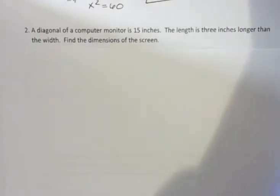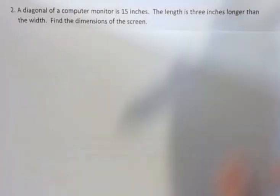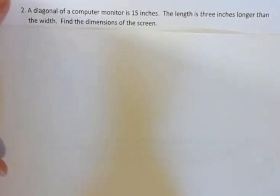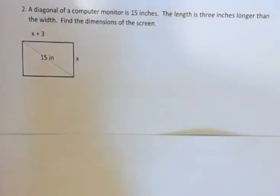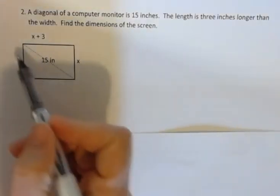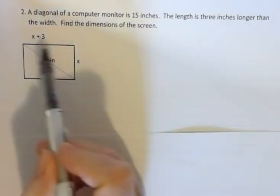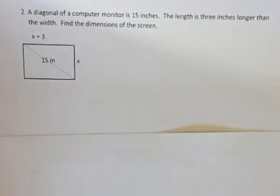Okay, in the second one the problem says the diagonal of a computer monitor is 15 inches. The length is 3 inches longer than the width. Find the dimensions of the screen. Once again I would say draw a picture. We know what a monitor would look like and I went ahead and sketched one out before. So we have a 15 inch monitor which means the diagonal is 15 inches. The length is 3 inches longer than the width. So if the width is x then the length is x plus 3.